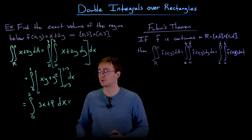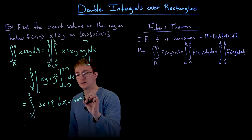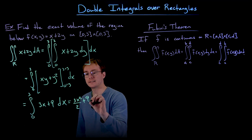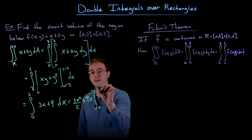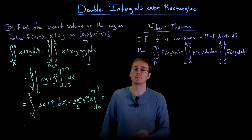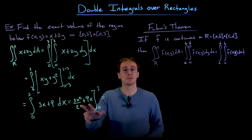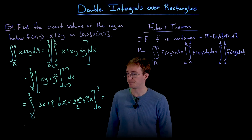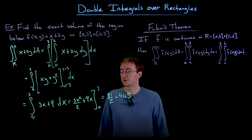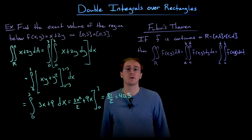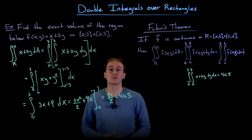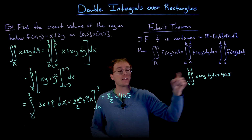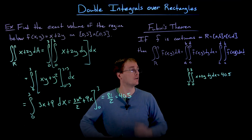Now we integrate with respect to x, which is more straightforward. The antiderivative of 3x is 3x²/2 and the antiderivative of 9 is 9x. Evaluating at x = 3 and x = 0 and taking the difference: the lower limit gives zeros, so we only need the upper limit. Plugging x = 3 into 3x²/2 + 9x gives 81/2, or 40.5. So integrating with respect to y first and then x gives a volume of 40.5.